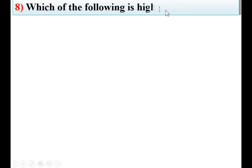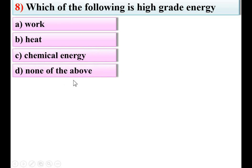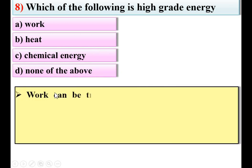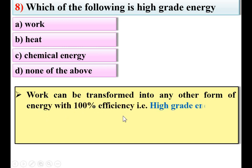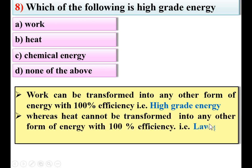Next: which of the following is high grade energy? Options: work, heat, chemical energy, none of the above. Work can be transformed into any other form of energy with 100% efficiency, and that is why it is called high grade energy. Heat cannot be transformed with 100% efficiency and is therefore low grade energy. So A is the right answer.